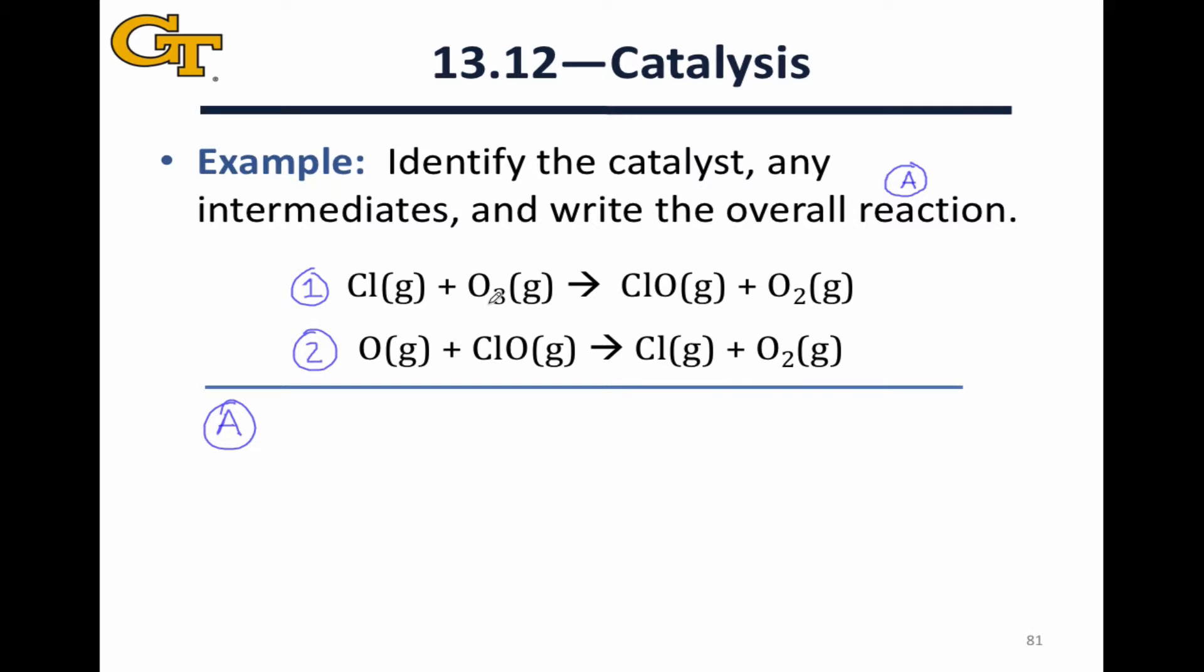Let's call them step one and step two. We can cancel out species that appear both on the reactant side and on the product side with equal stoichiometric coefficients. So what we can see then is that the CLs cancel out.